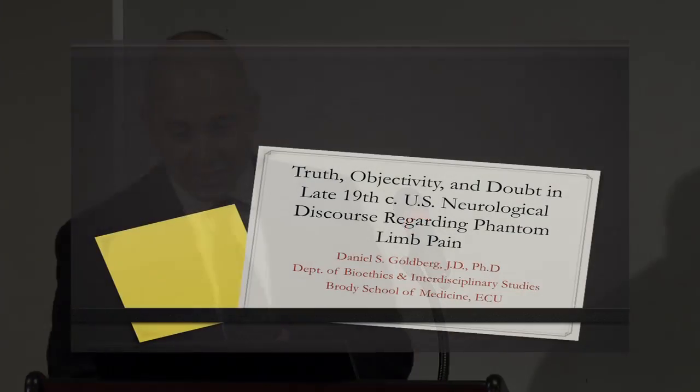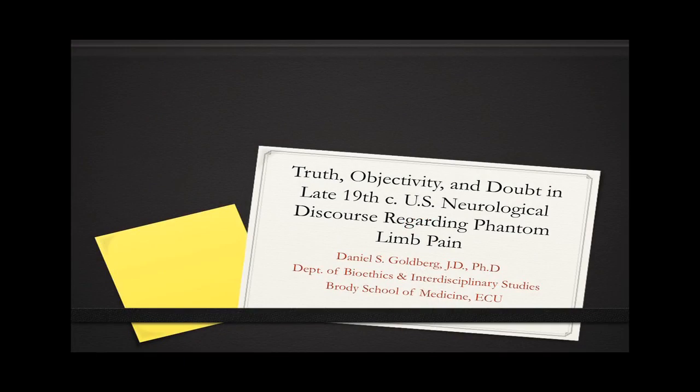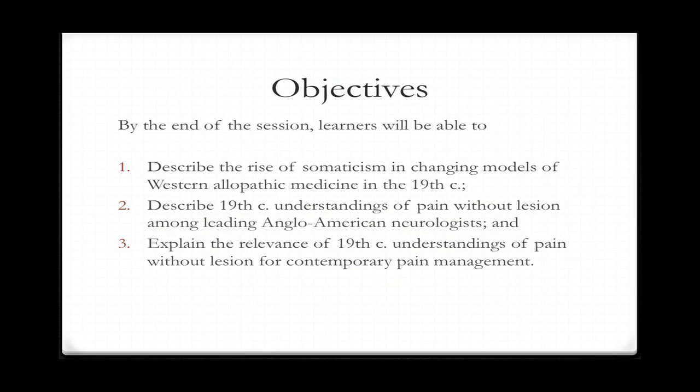This is quite a handful of a title. So this is what you can hold me accountable for by the end of today. The goals are: to describe the rise of somaticism in changing models of Western medicine in the 19th century; to describe a 19th century understanding of pain without lesion among leading Anglo-American neurologists; and to explain the relevance of 19th century understandings of pain without lesion for contemporary pain management.